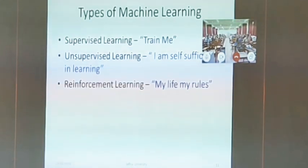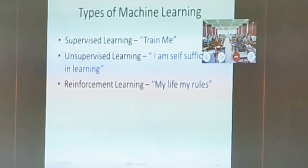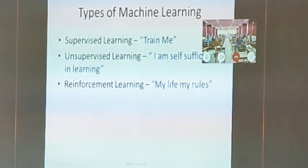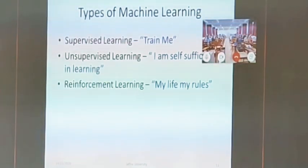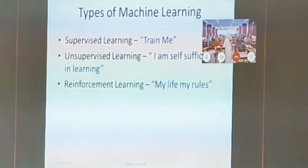There are basically three types of machine learning: supervised learning, unsupervised learning, and reinforcement learning. In supervised learning, a supervisor trains the model — like professors in a class. Unsupervised learning is like more intelligent, self-sufficient learners who learn by themselves. Reinforcement learning operates on a trial-and-error basis — 'my life, my rules.' These are the three main types of machine learning.